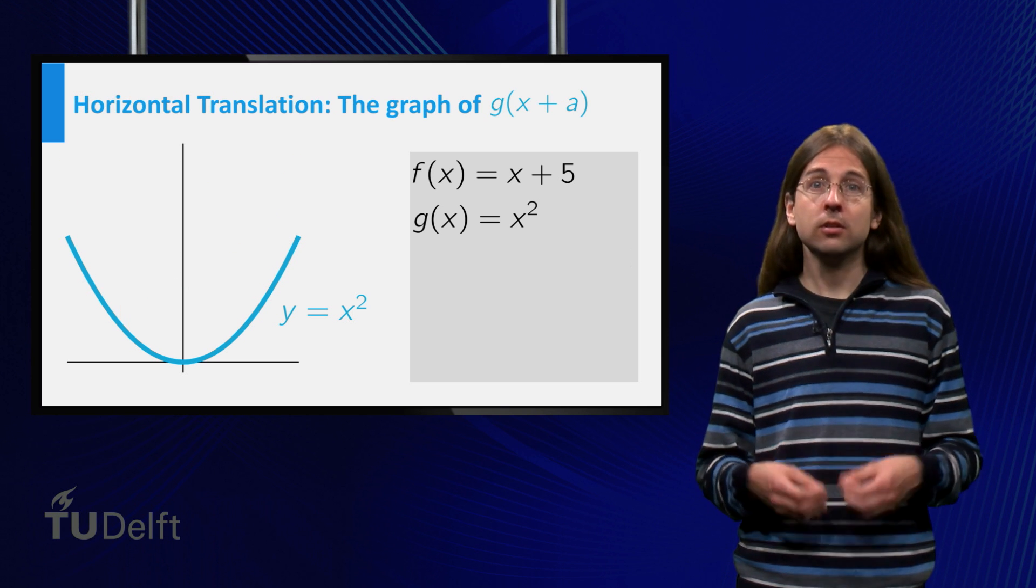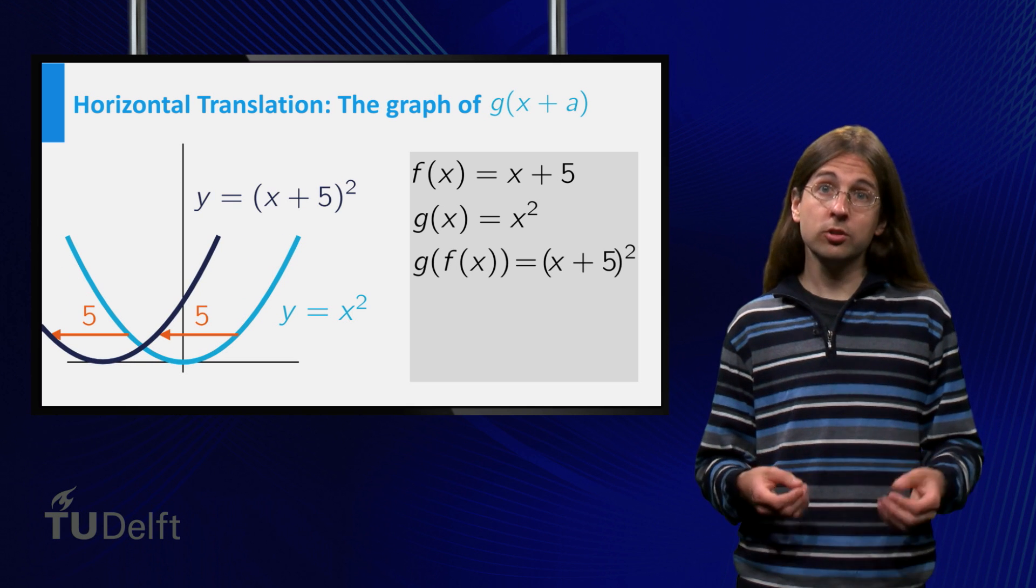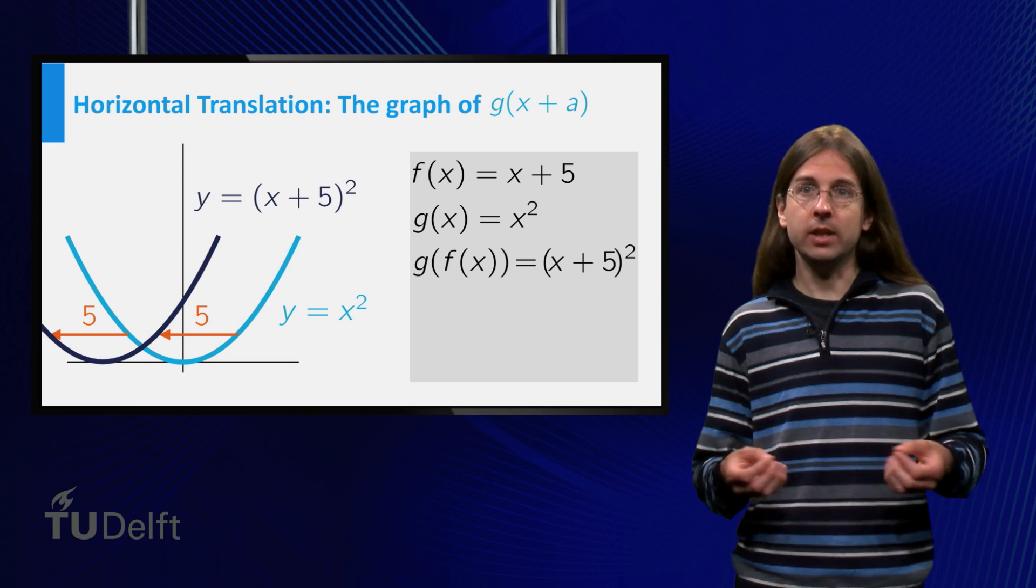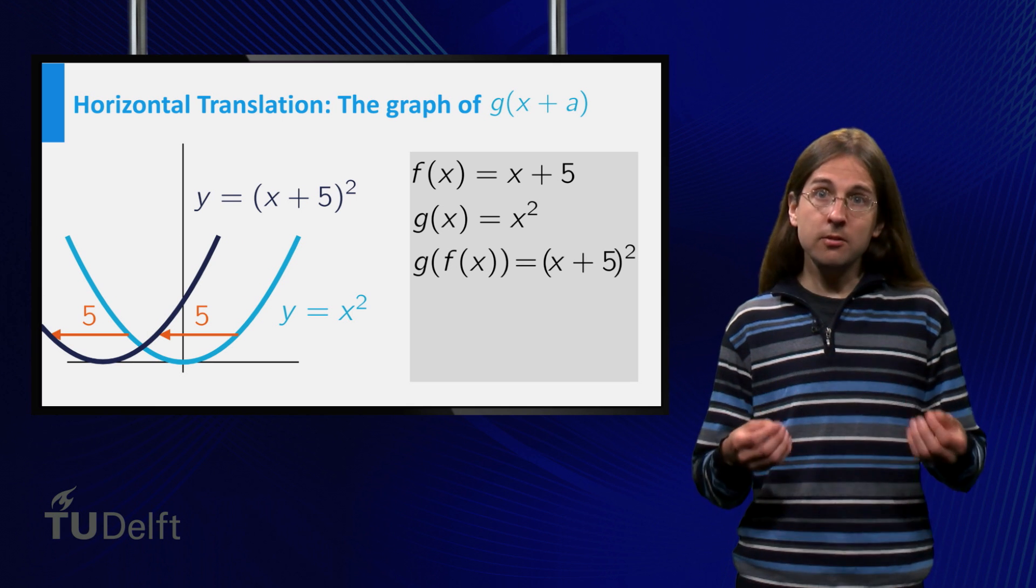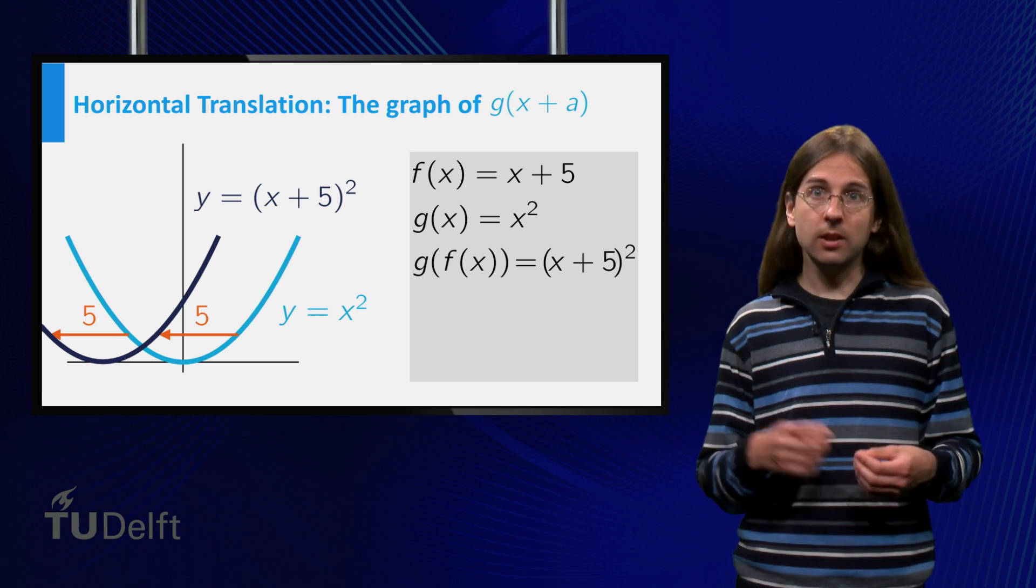Now we consider the composition in the alternative order. g of f equals x plus 5 squared. As you can see the graph is again translated, but now it is shifted 5 to the left.